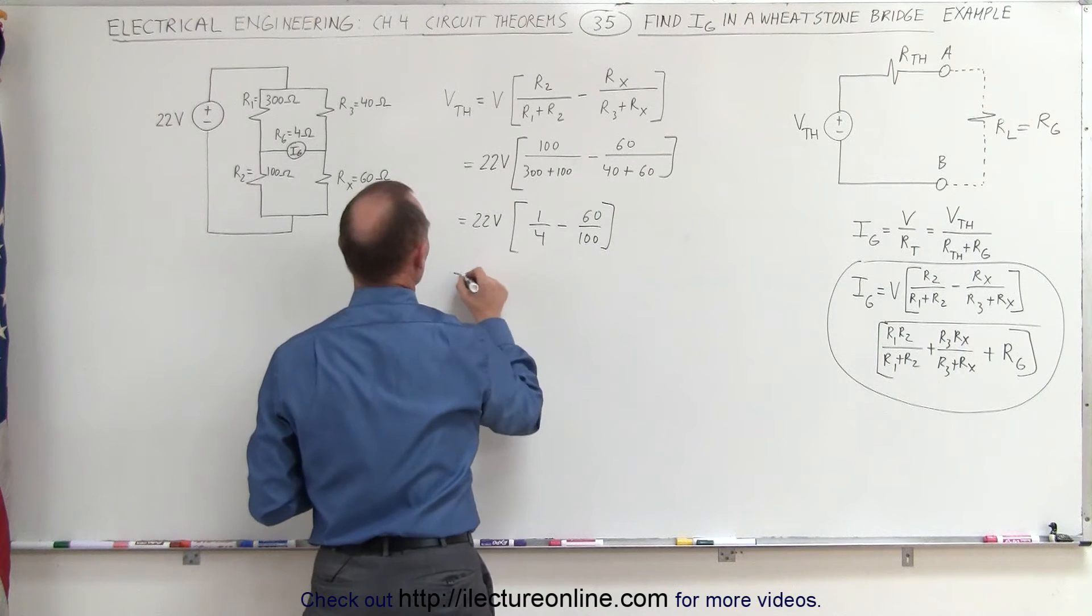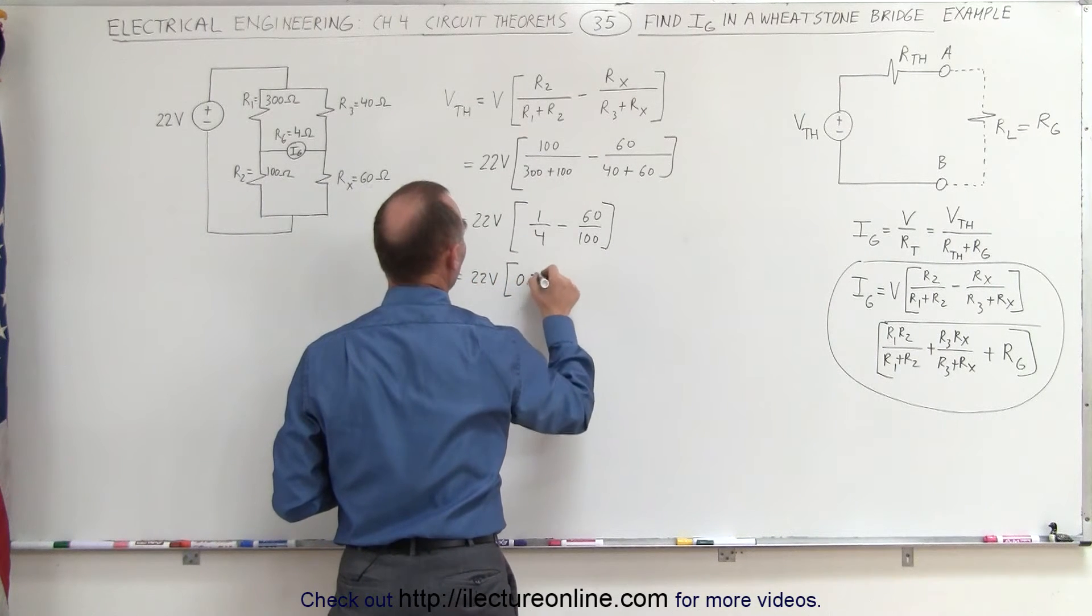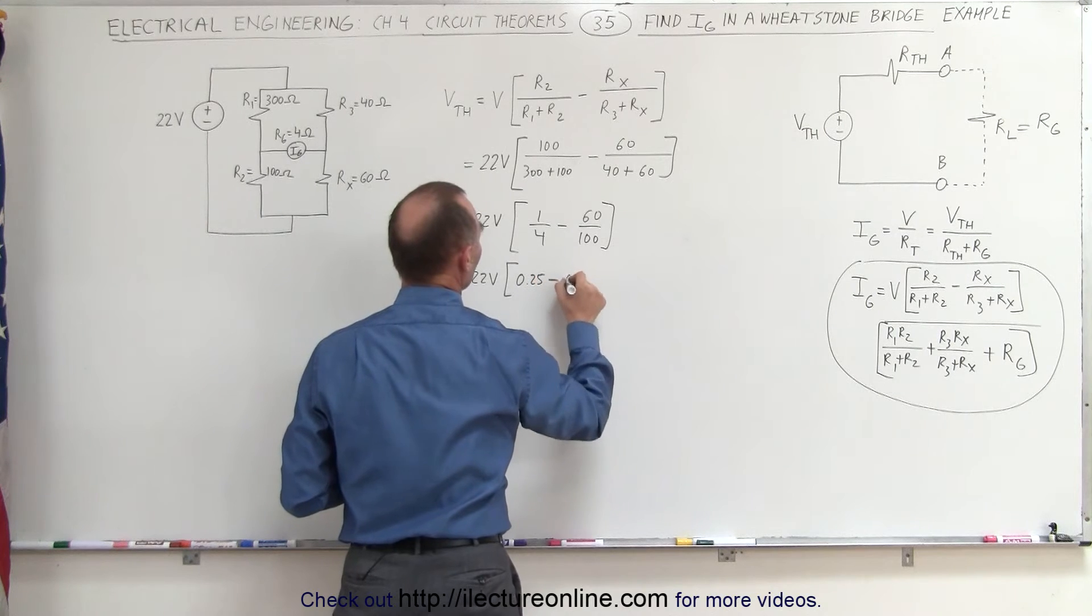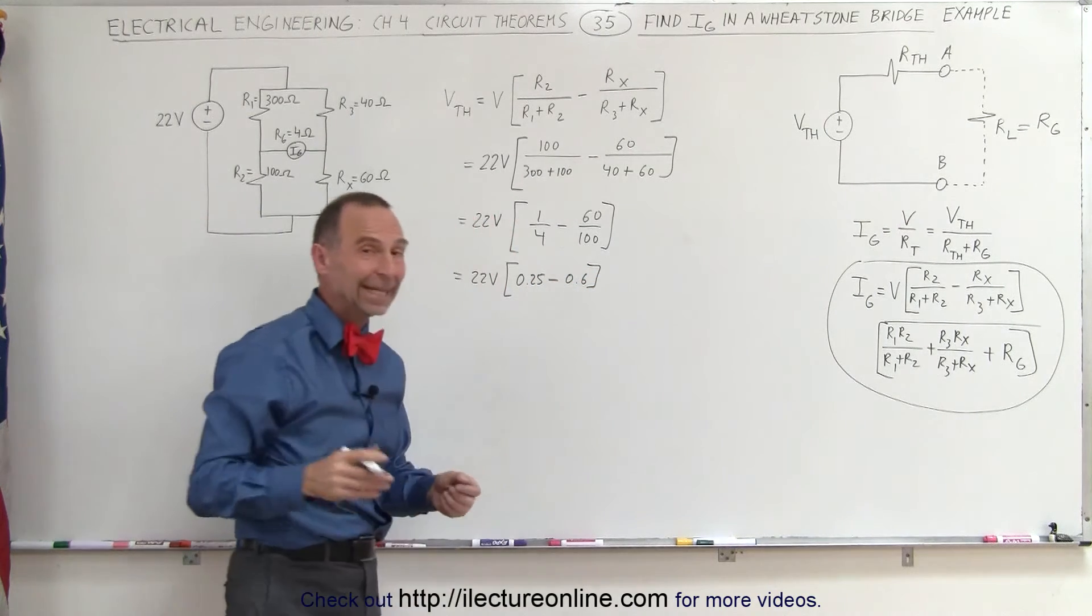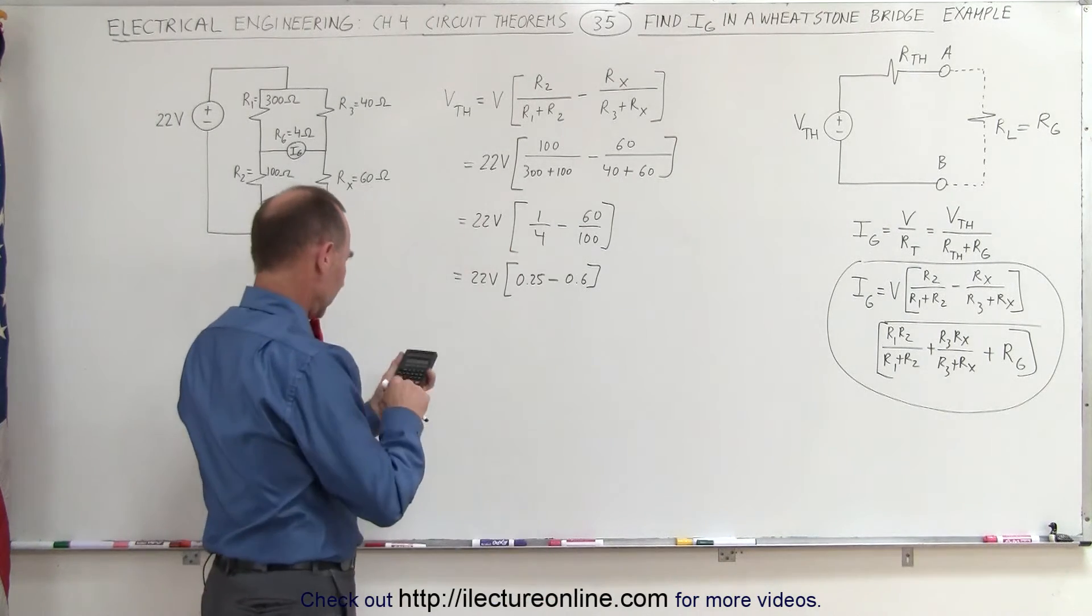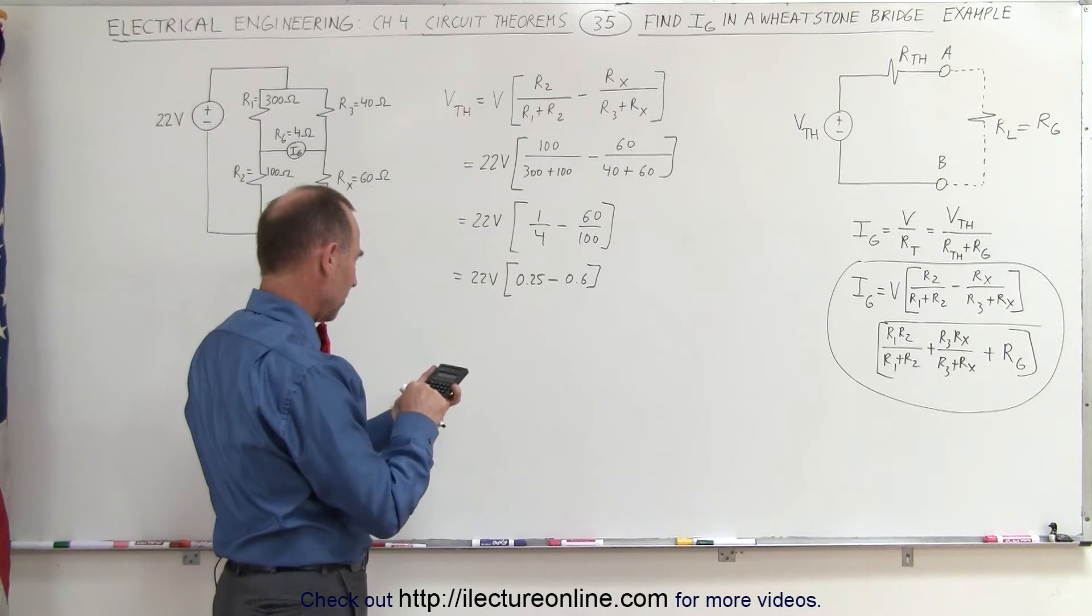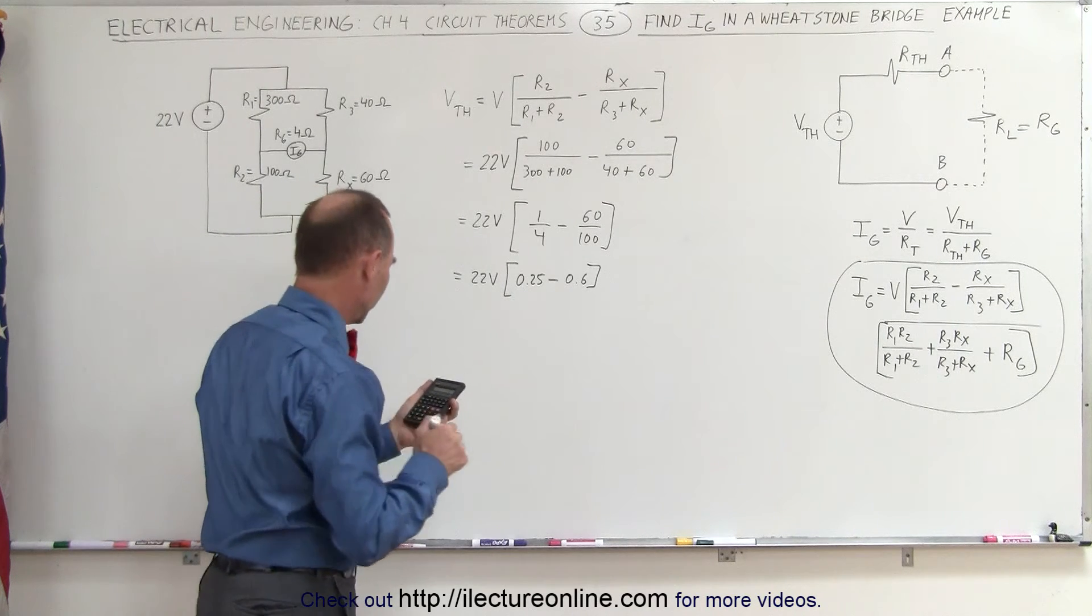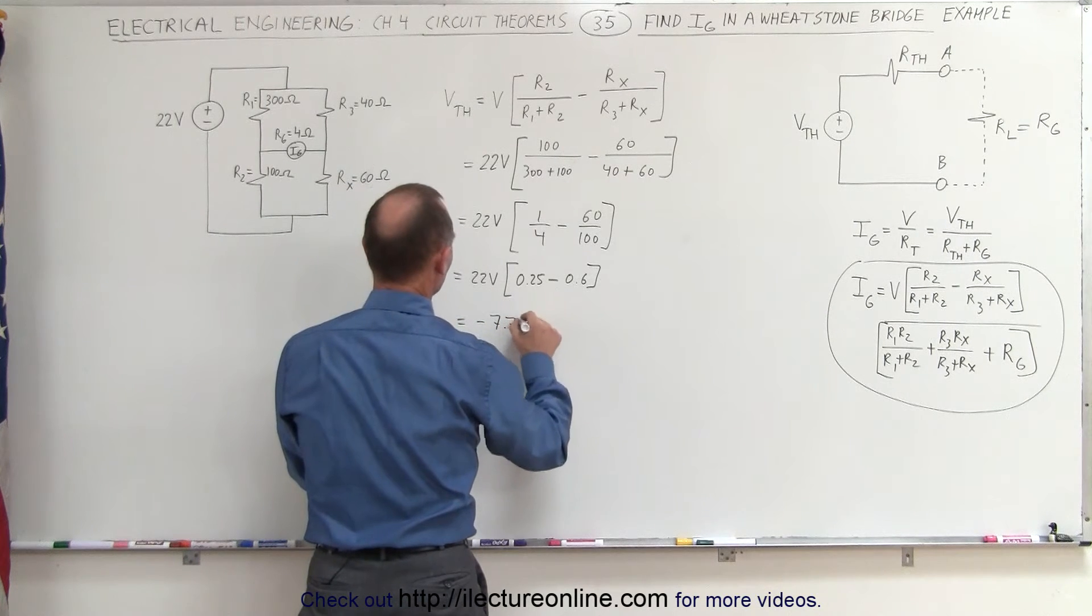So this is equal to 22 volts times 0.25 minus 0.6. Notice since this is bigger than that, I am going to get a negative value, but that's quite all right. 0.25 minus 0.6 and multiplying that times 22 volts, I get this is equal to a negative 7.7 volts,